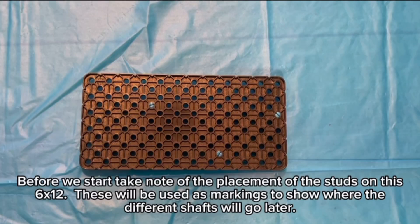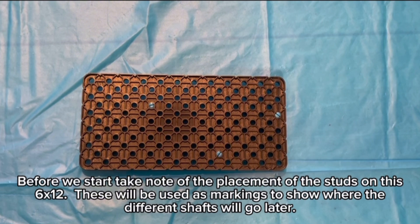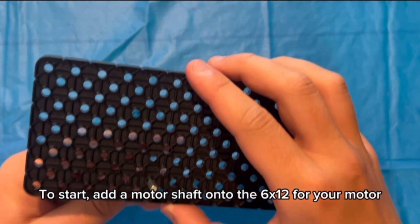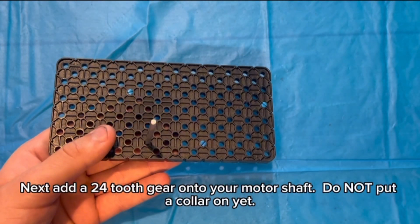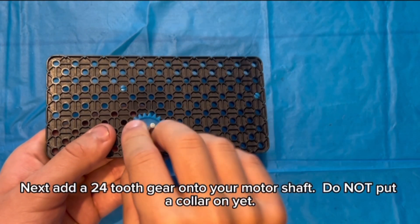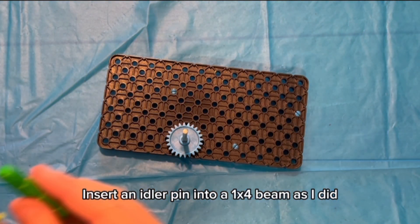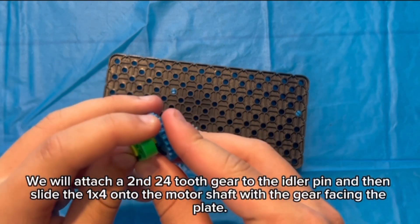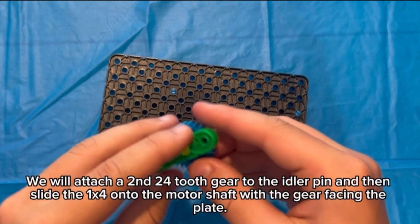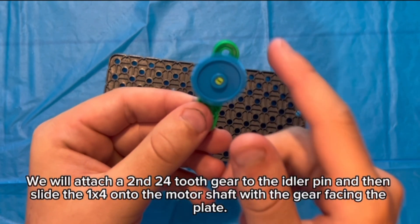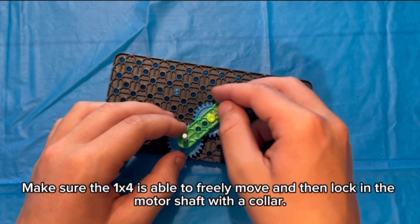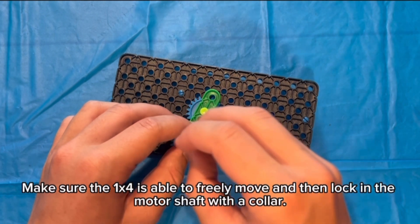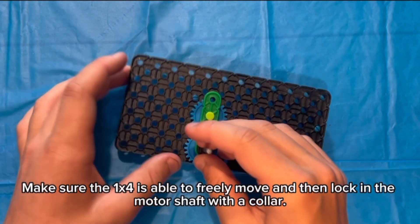Before we start take note of the placement of the studs on the 6x12. These will be used as markings to show where the different shafts will go later. To start add a motor shaft onto the 6x12 for your motor. Next add a 24 tooth gear onto your motor shaft. Do not put a collar on yet. Insert an idler pin into a 1x4 beam as I did. We will attach a second 24 tooth gear to the idler pin and then slide the 1x4 onto the motor shaft with the gear facing the plate. Make sure the 1x4 is able to freely move and then lock in the motor shaft with a collar.